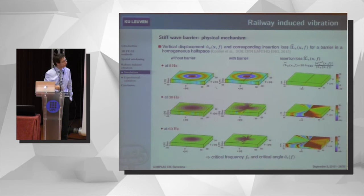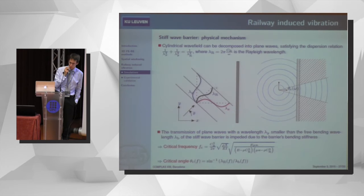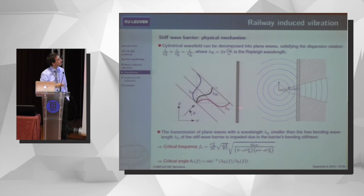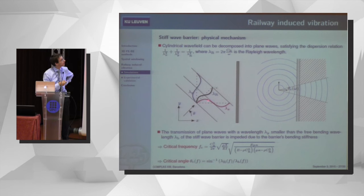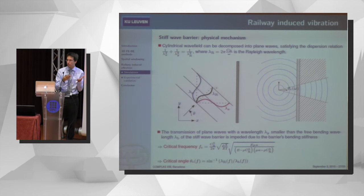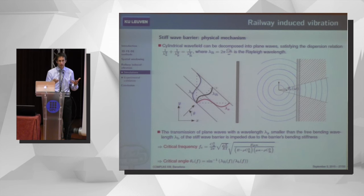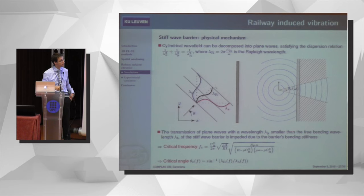We were puzzled by this result, but it can be explained very well by considering the dispersion of Rayleigh waves in the soil and bending waves in the barrier. The wave in the soil can be decomposed into a set of plane waves, each with a certain wavelength, and what the barrier observes is the trace wavelength. If this trace wavelength is smaller than the free bending wavelength of the barrier, the bending stiffness of the barrier will block the propagation of these waves — very similar to the coincidence phenomenon in acoustics. This leads to a critical frequency given by the intersection of the dispersion curves of the Rayleigh waves in the soil and the bending waves in the barrier.